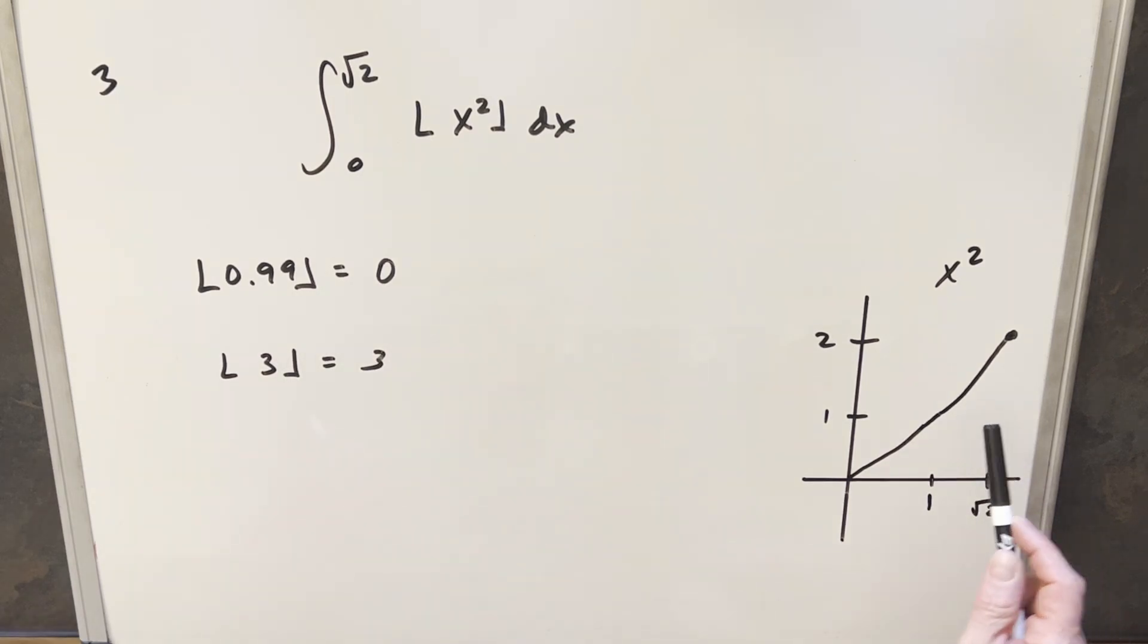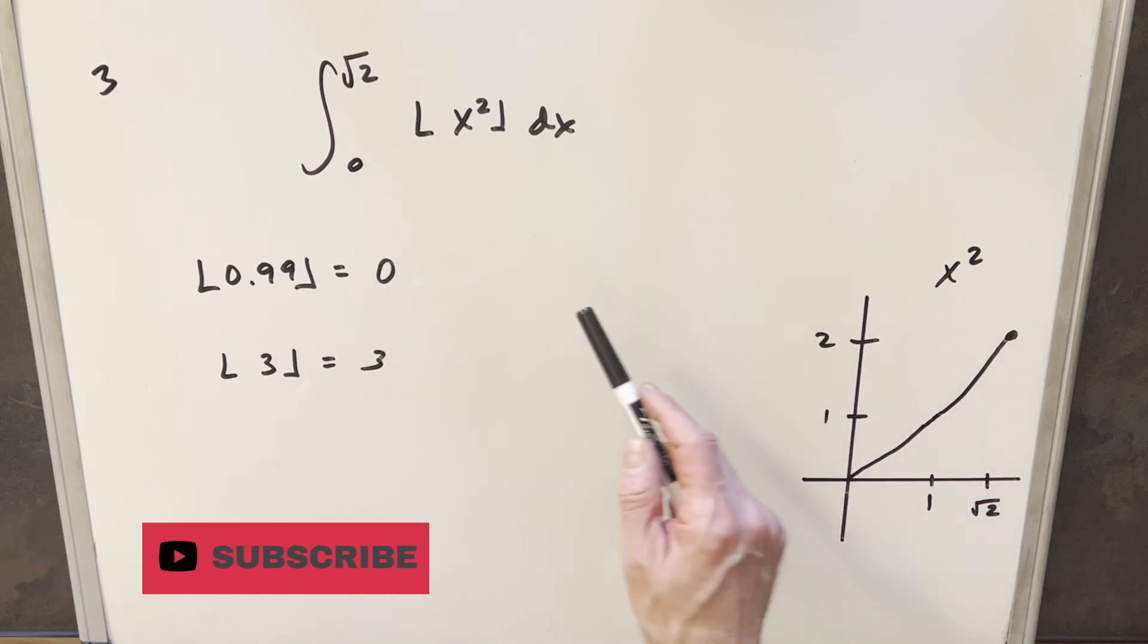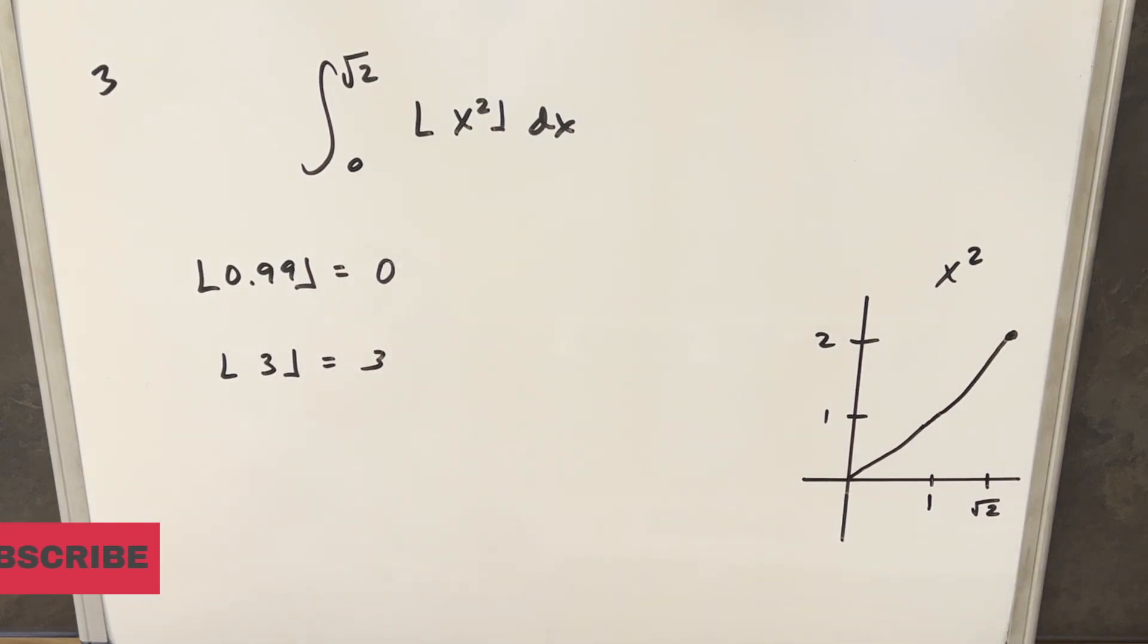So what I have over here to the right is the graph of x squared, not the floor of x squared, just our graph of x squared on these bounds from 0 to square root of 2. And so you see when our x value is square root of 2, we're just going to get 2. Now with the integral, we're not really that interested in what happens at endpoints just because it's not going to have any area. So we're really interested in what's happening between the endpoints.